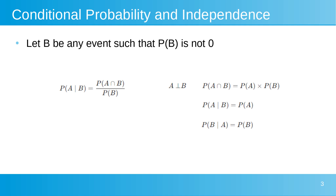Independence between two events A and B means that the occurrence of one does not affect the probability of the other, mathematically expressed as P(A and B) = P(A) * P(B). For independent events, the conditional probability simplifies to P(A|B) = P(A) and also P(B|A) = P(B), indicating that knowing the occurrence of one event does not change the probability of the other.